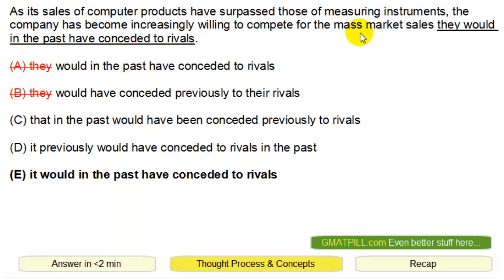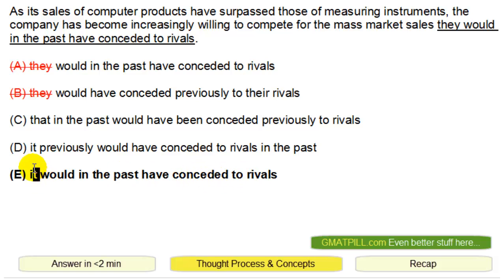Let's read it through one more time. As this is happening, the company has become increasingly willing to compete for sales it would in the past have conceded to rivals. That makes sense. 'It' probably references 'company,' so this is correct.